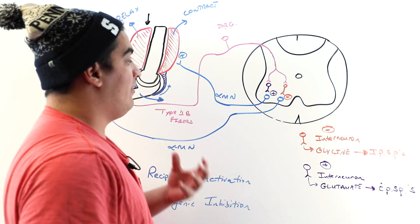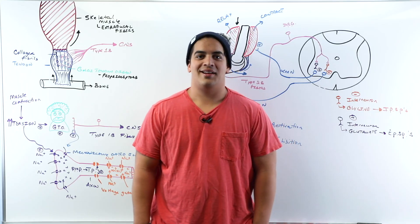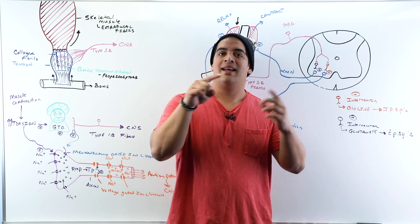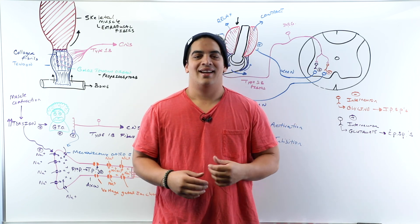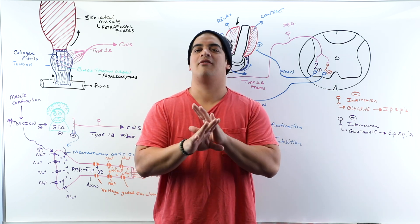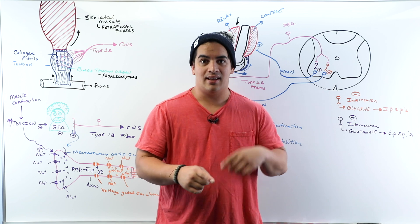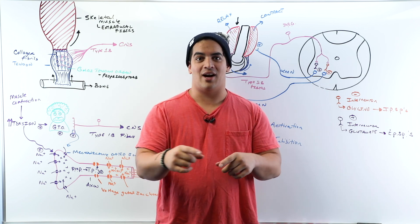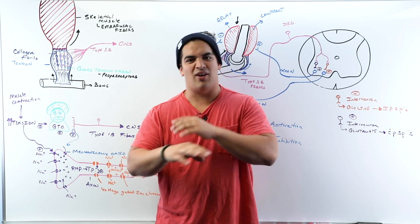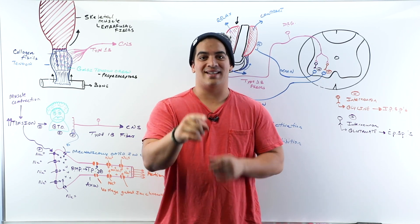That covers our Golgi tendon organ reflex and the processes involved. In this video, we talked about the Golgi tendon organ and the associated inverse myotatic reflex — also called autogenic inhibition and reciprocal activation. Hope this made sense. Please hit the like button, comment, and subscribe. Links to our Facebook, Instagram, and Patreon are in the description.